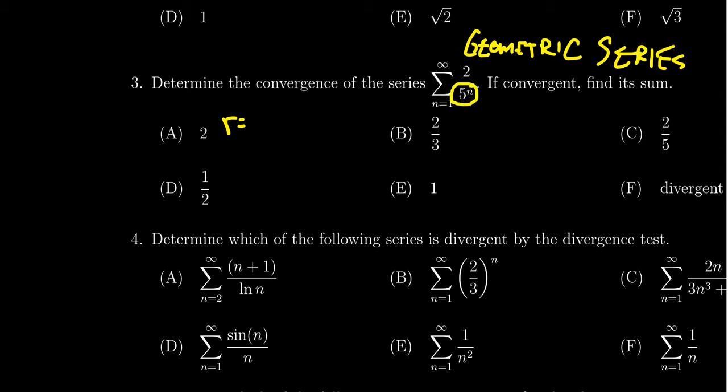We get this 1 over 5 to the n. So that means our constant ratio will be 1 fifth. We're looking for the base of our exponential growth in this situation. So that's a small ratio. The ratio is less than 1, so this tells us that we are convergent.